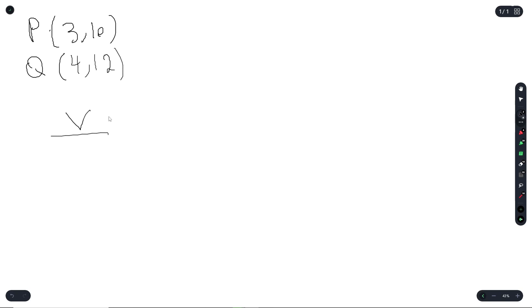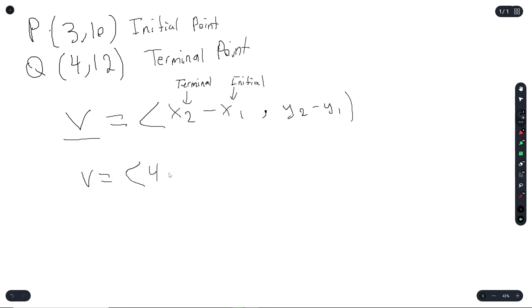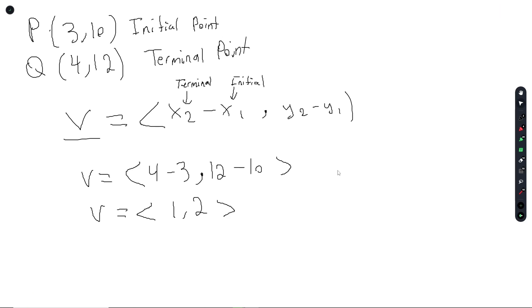They're asking for a component form. The way you write a component: V is equal to (X2 minus X1, Y2 minus Y1). X2 is the terminal point and X1 is the initial point. So the component form of vector PQ, which is V, equals (4 minus 3, 12 minus 10), giving us component V = (1, 2).